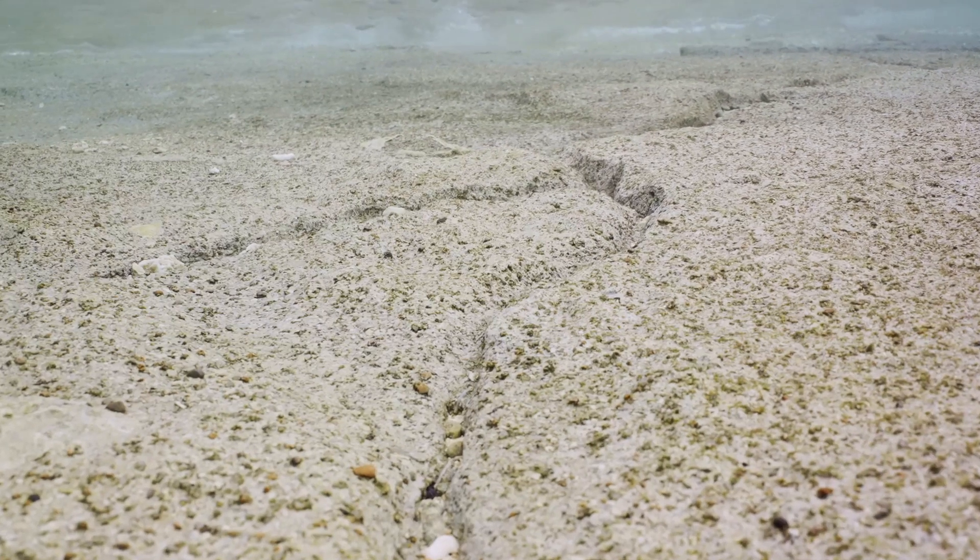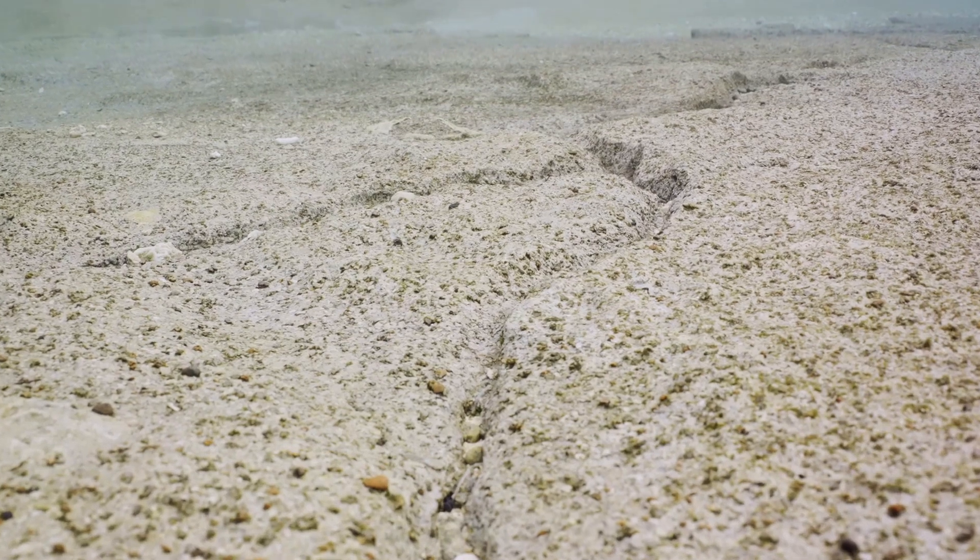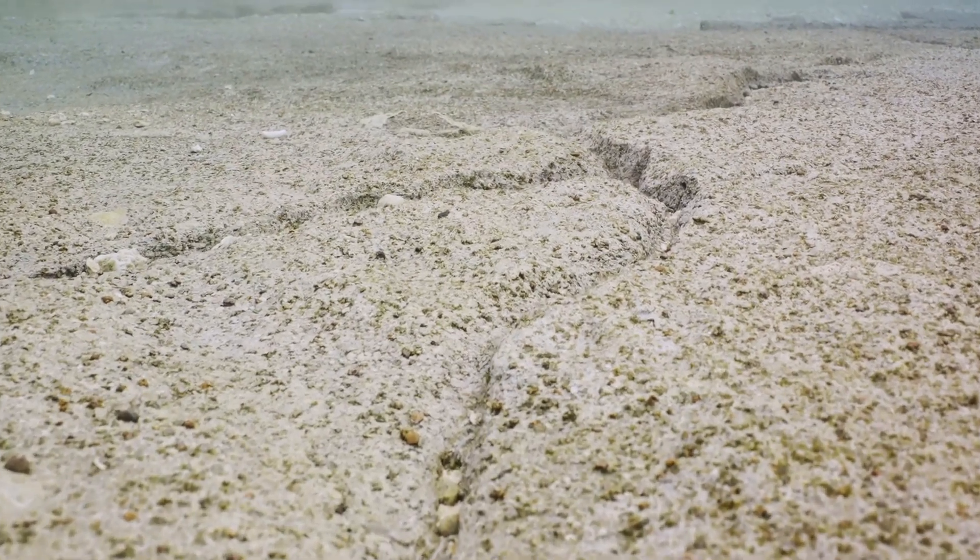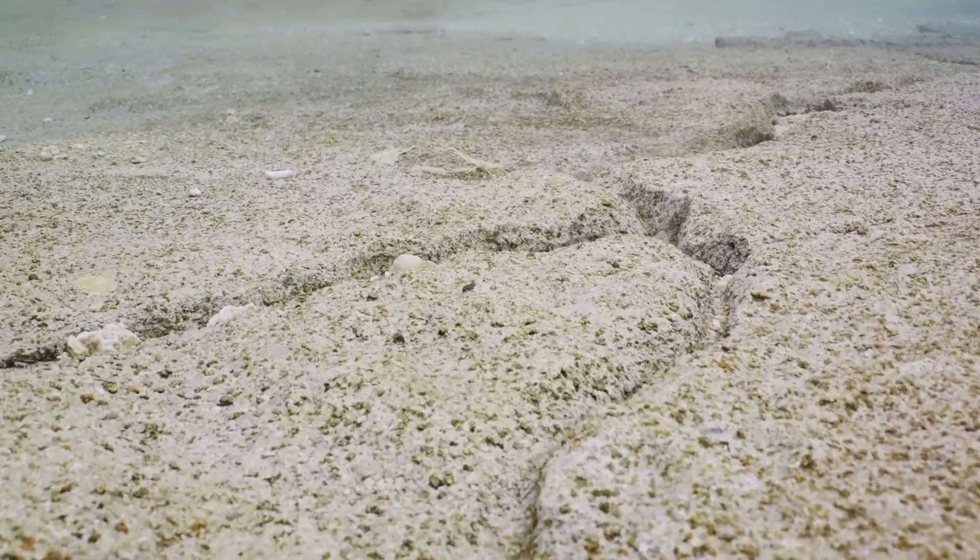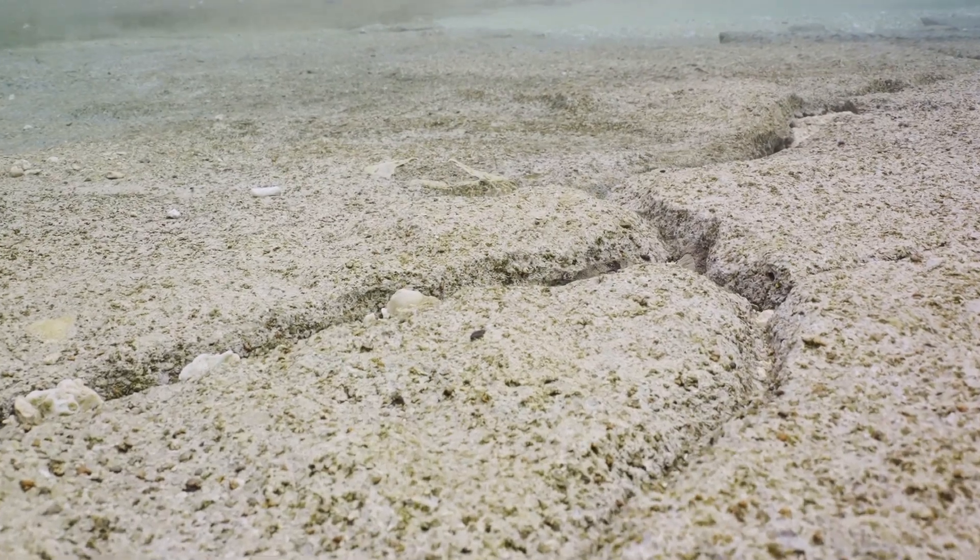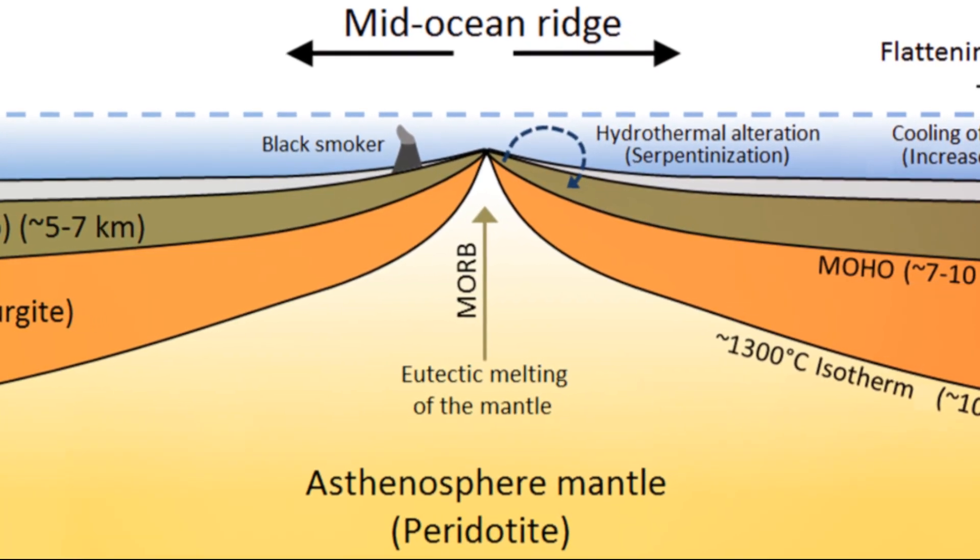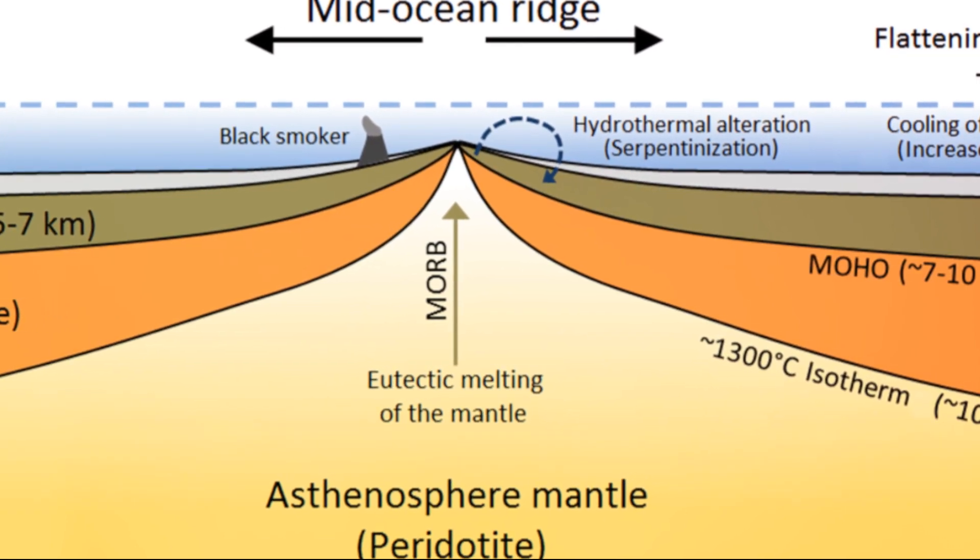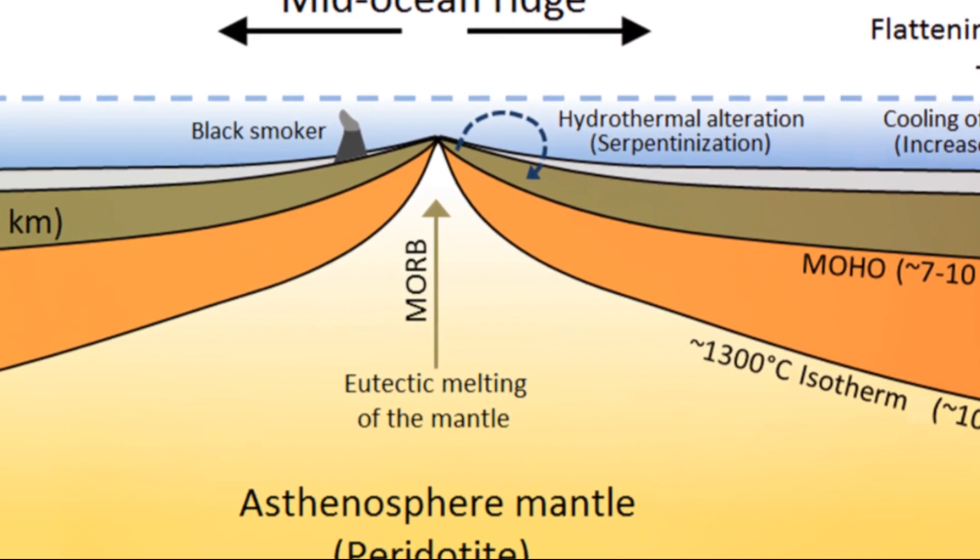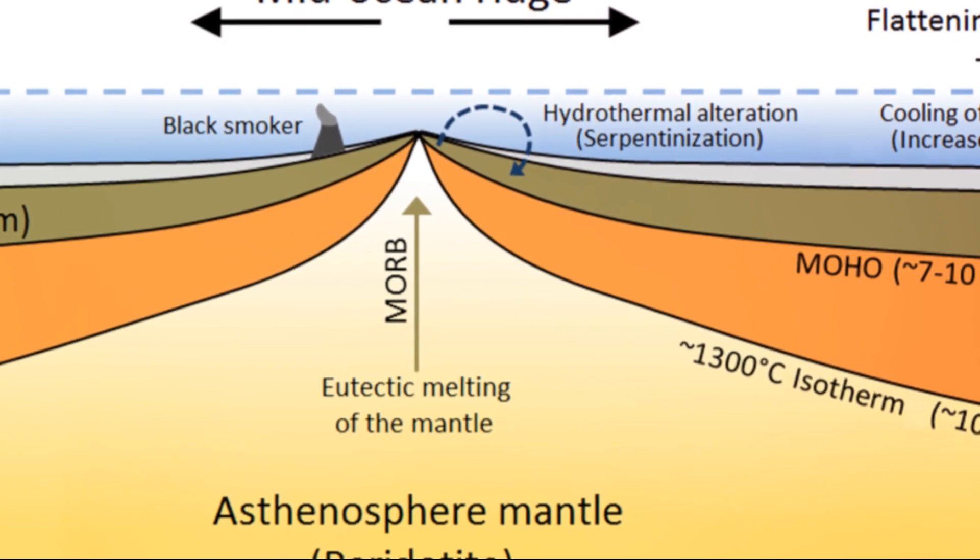Through the study of the ocean floor, scientists discovered a pattern of magnetic stripes that provided proof of seafloor spreading, a process where new oceanic crust is formed at mid-ocean ridges and moves away from the ridge over time. This discovery led to the development of the theory of plate tectonics in the late 20th century.